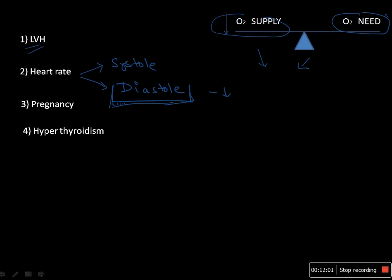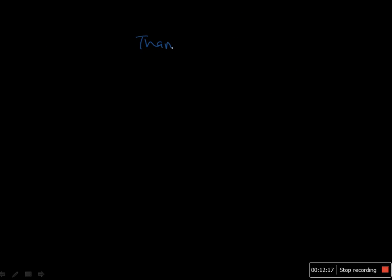This is how there is an imbalance between oxygen supply and oxygen need, which can precipitate ischemic heart disease. Remember, these are not a single heart disease — these are indeed a group of clinical pathological syndromes which precipitate and form ischemic heart disease. Thanks for watching.